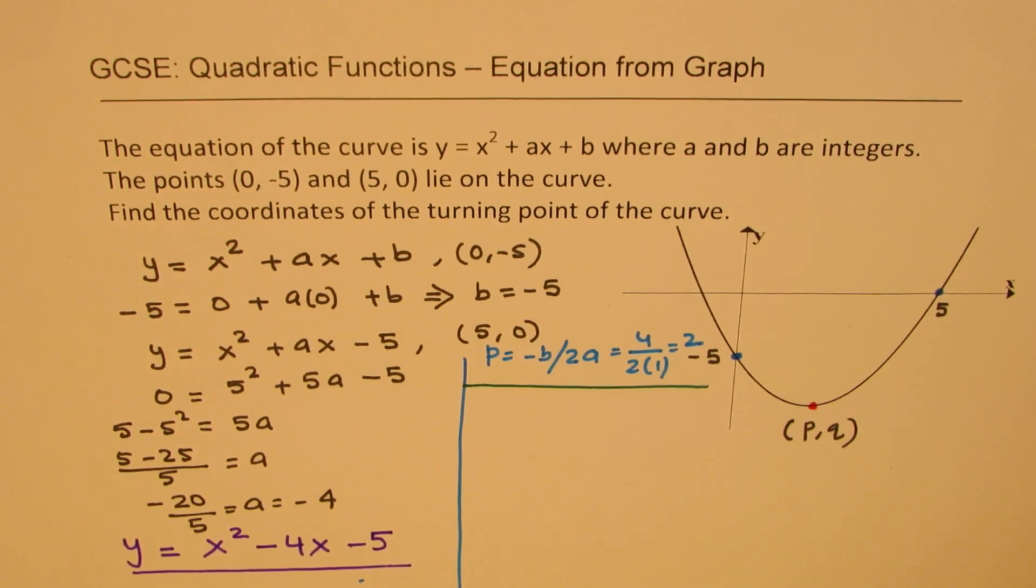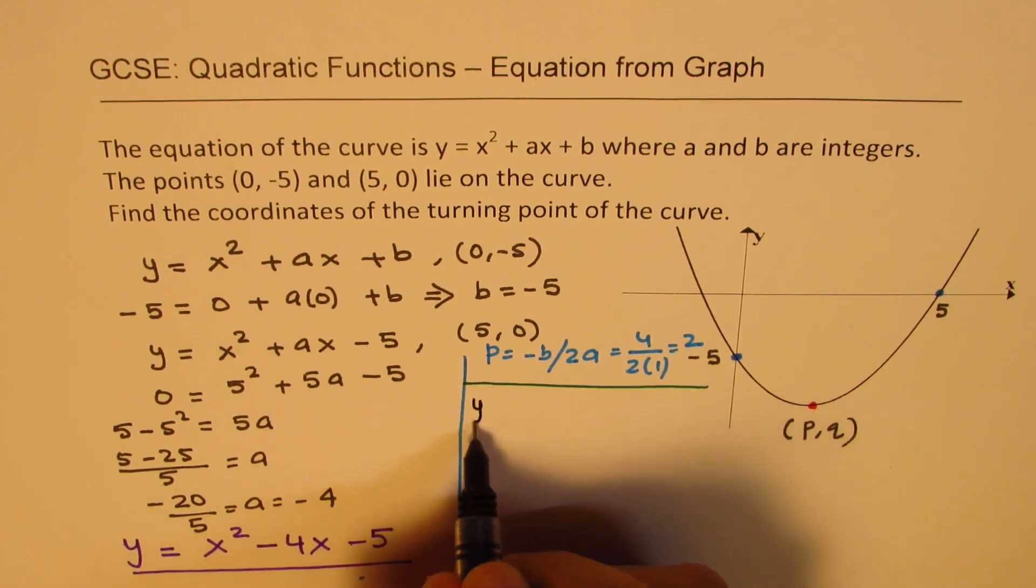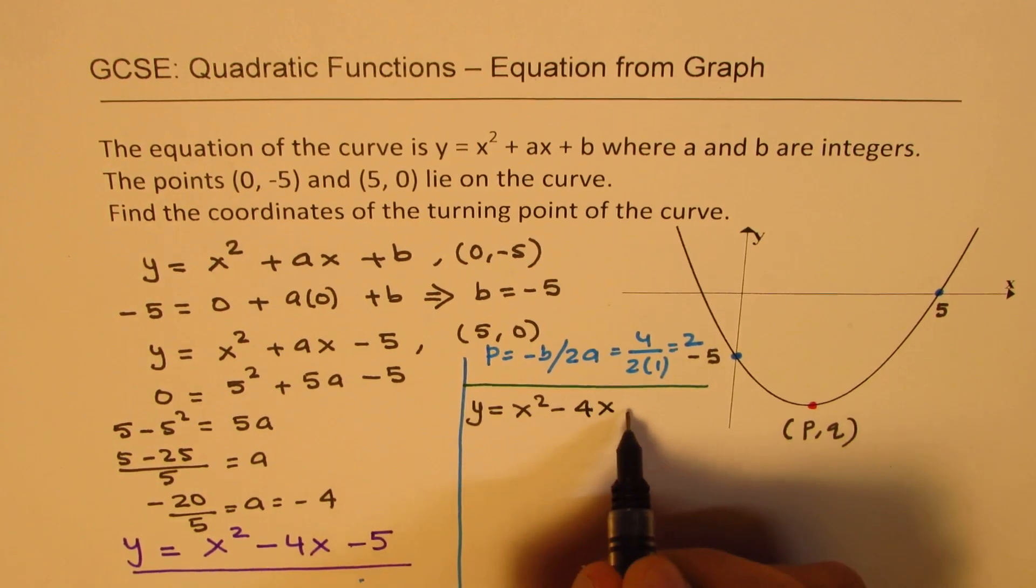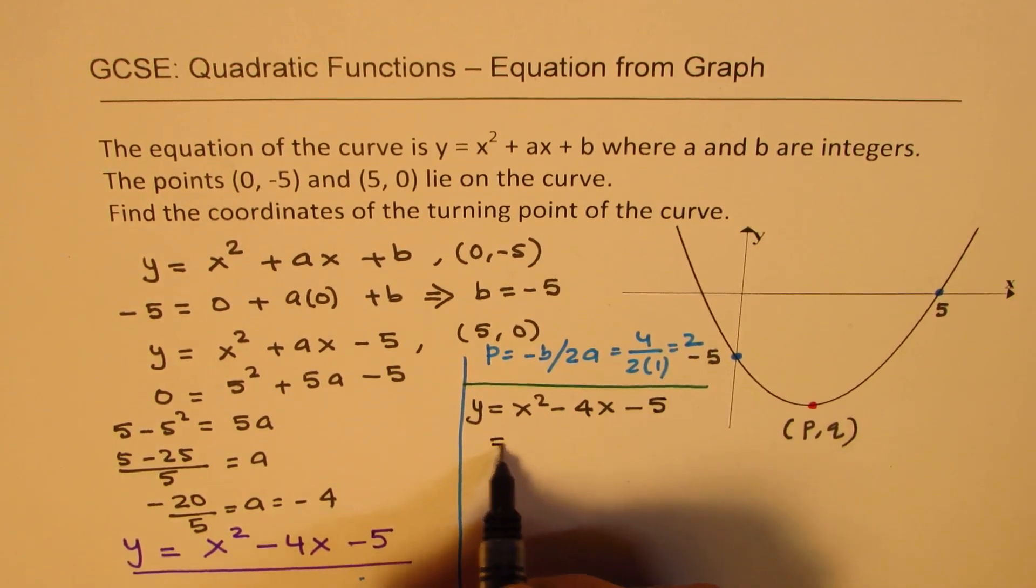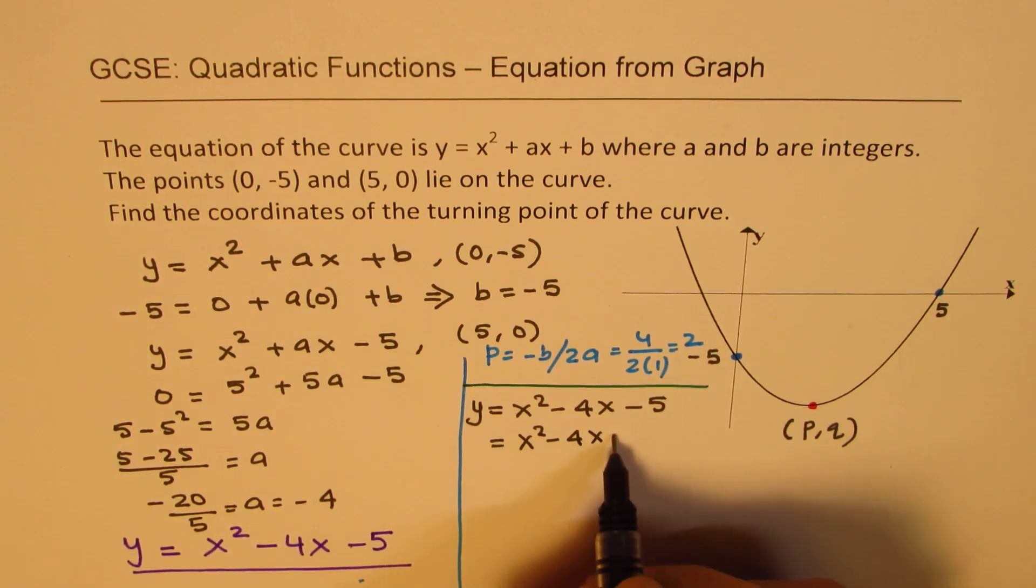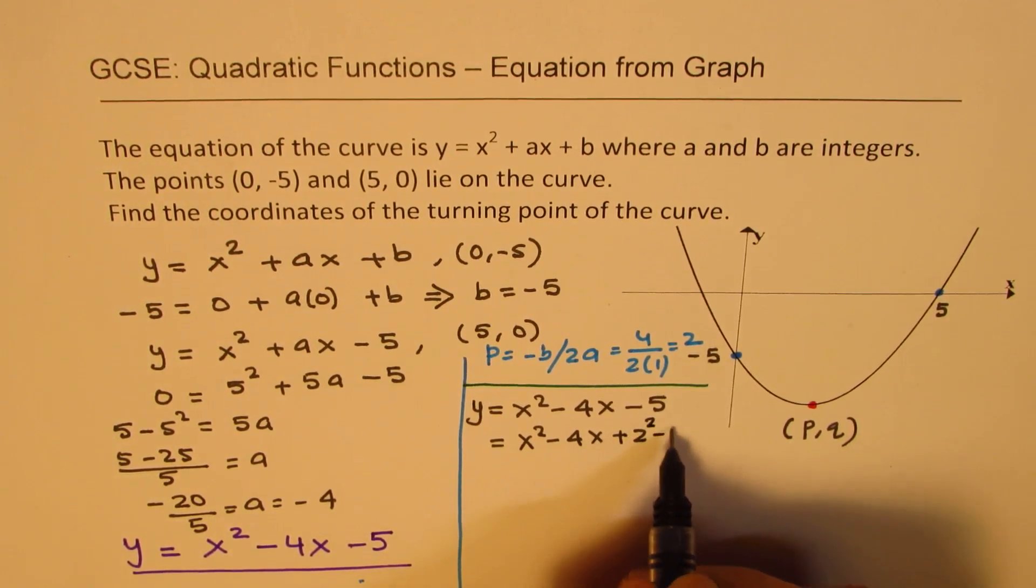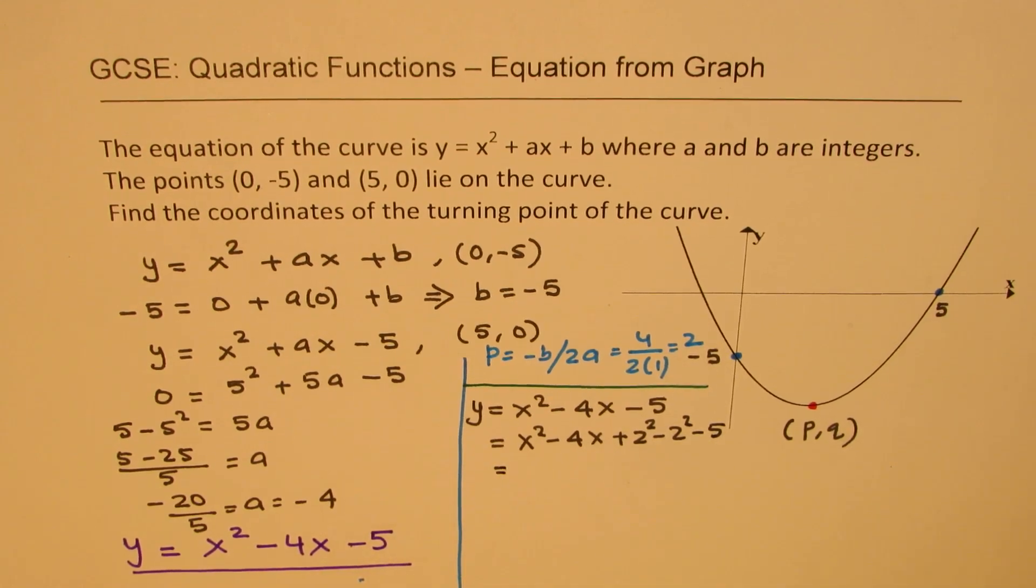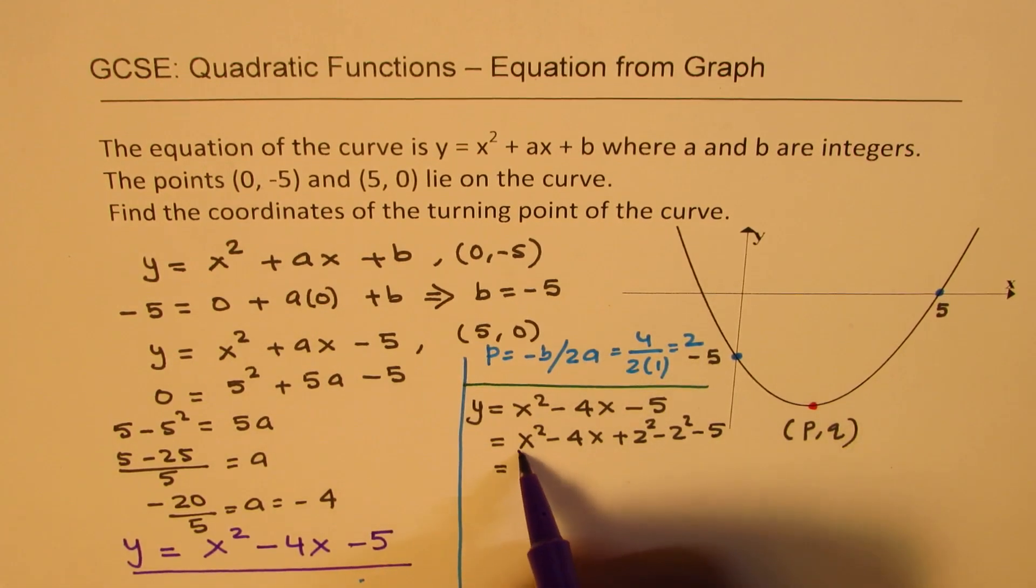So we have y equals x squared minus 4x minus 5. We could add and subtract half of 4, which is 2. So we'll add and subtract 2 squared, so that these three terms become a perfect square.